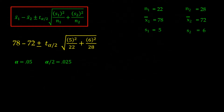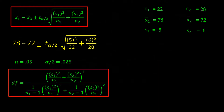Now we need to calculate degrees of freedom. The formula for two populations is trickier than for one population where we simply take n minus 1. This formula works for cases where we don't know if the variances are equal. If the variances were equal, we could simply take n1 plus n2 minus 2, which gives 22 plus 28 minus 2, or 48. But we can't do that unless we know for sure the variances are equal, so let's use the full formula.